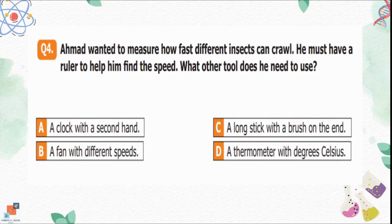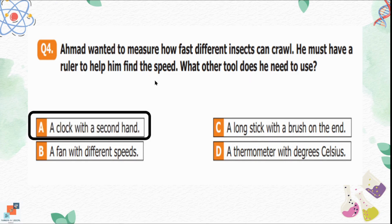Question number 4: Ahmed wanted to measure how fast different insects can crawl. He has a ruler to find the speed. What other tool does he need? Option A is a clock with a second hand. Option B is a fan with different speeds. Option C is a long stick with a brush on the end. Option D is a thermometer with degrees Celsius. Option A is the correct option because the speed of crawling insects will be measured in seconds. A fan, a long stick, or a thermometer — which measures temperature, not speed — are not useful here.